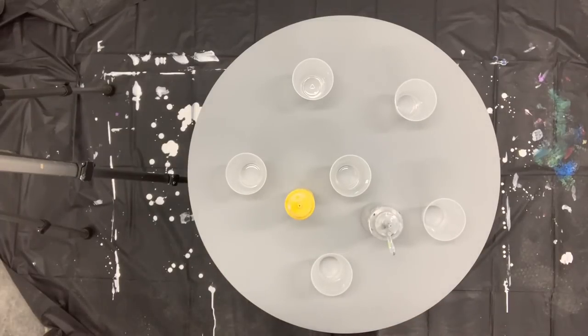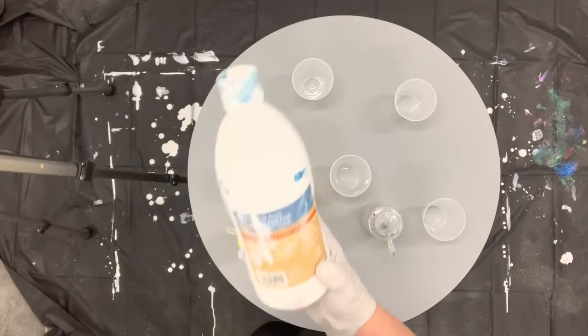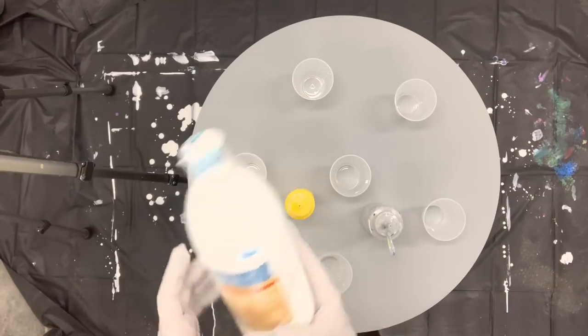All my paints have been mixed with my pouring medium, which is four cups of Floetrol, one cup of Glue All, half a cup of Liquitex pouring medium, and a quarter cup of water. My final color is the Artist Loft's Flow Acrylic white.